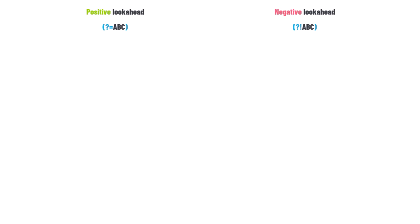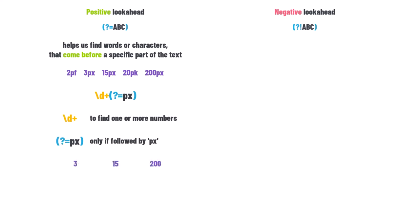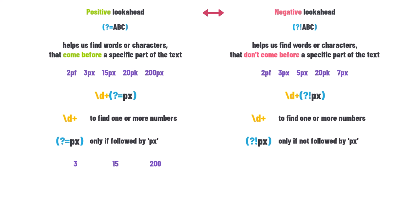Positive look-ahead helps us find words or characters that come before a specific part of the text. For example, to find numbers that come before the word 'px', we use a pattern like \d+(?=px) — this part finds one or more numbers, and (?=px) means 'only if followed by px'. Negative look-ahead is the opposite: \d+(?!px) finds numbers that do NOT come before px.